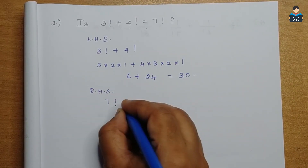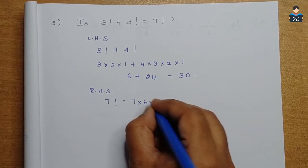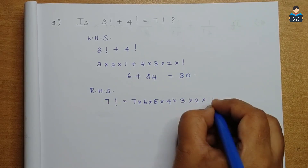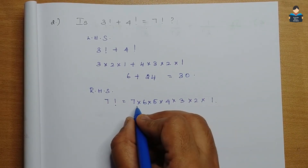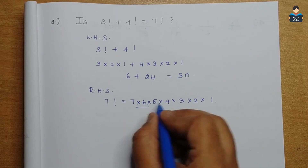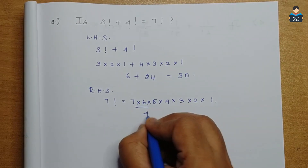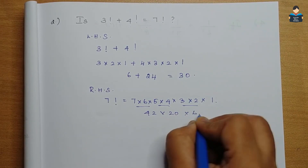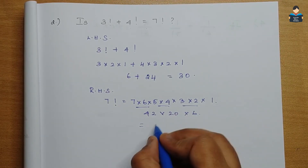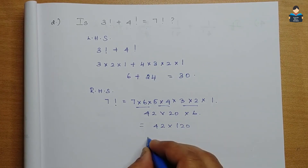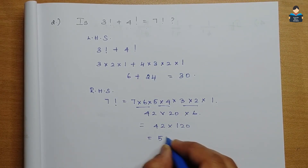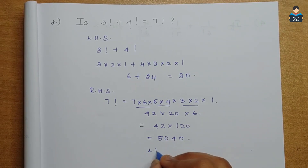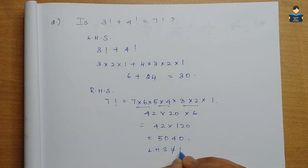Now RHS: 7 factorial = 7 into 6 into 5 into 4 into 3 into 2 into 1. Multiplying: 7 × 6 = 42, then into 20, into 6. The result is much larger than 30. So LHS is not equal to RHS — the statement is false.